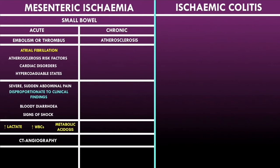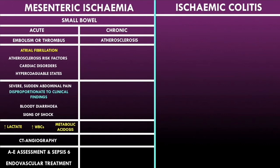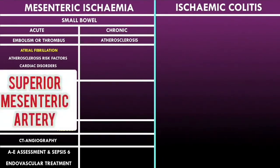In terms of management of acute mesenteric ischemia, it is very important to perform a full A-to-E assessment and carry out sepsis 6 as appropriate, given the risk of bowel perforation and subsequent abdominal sepsis. Definitive management includes endovascular treatment to remove the embolism or thrombus. A high-yield fact to remember is that it is usually the superior mesenteric artery that is occluded in acute mesenteric ischemia.